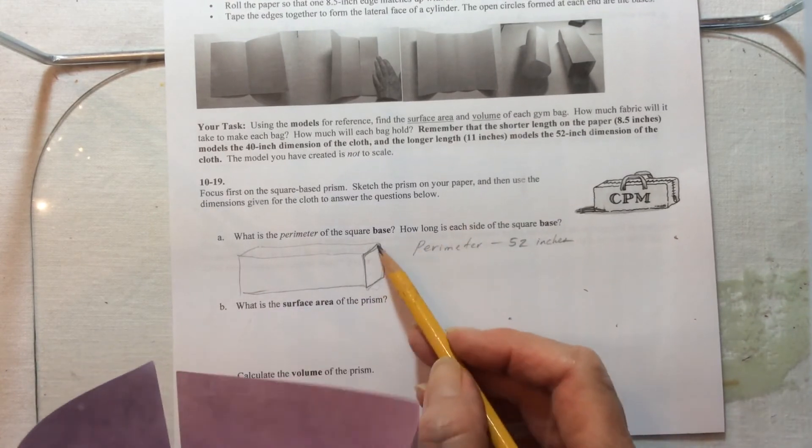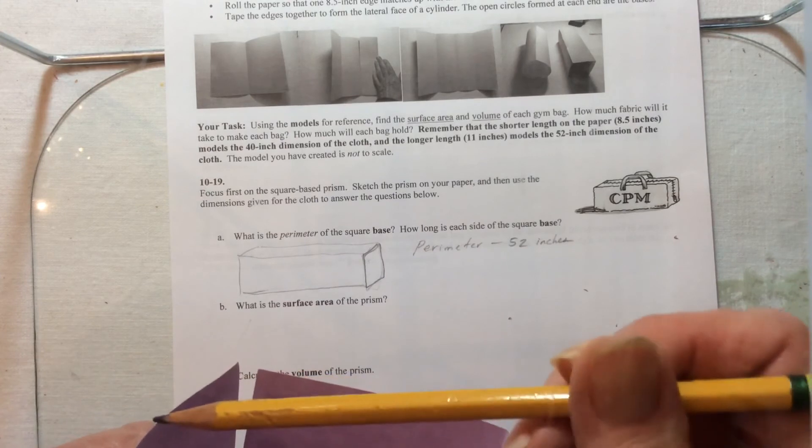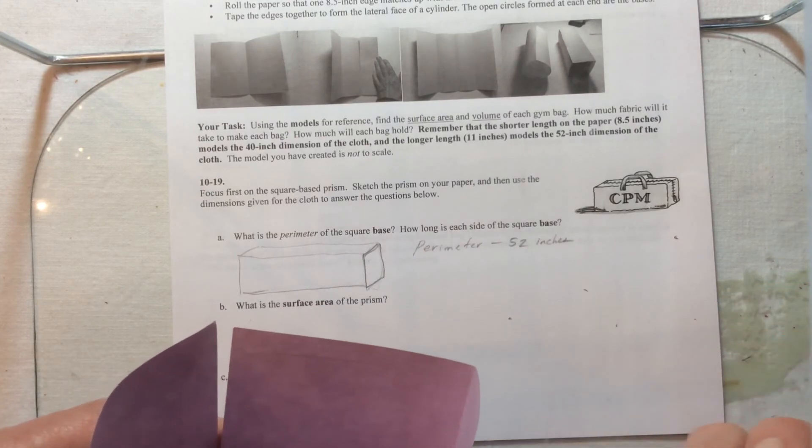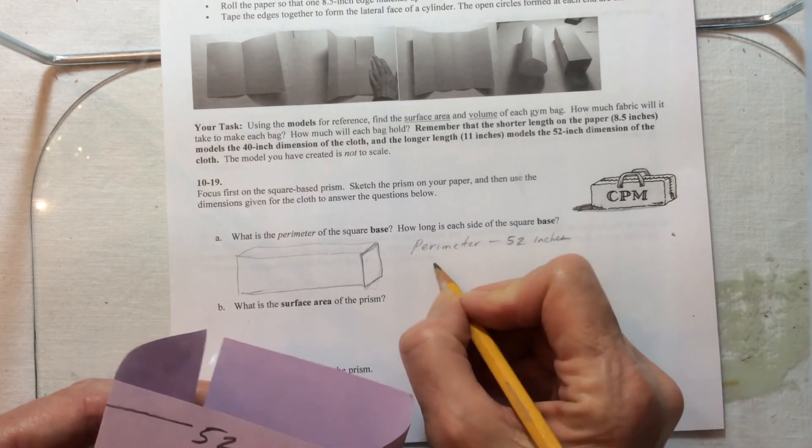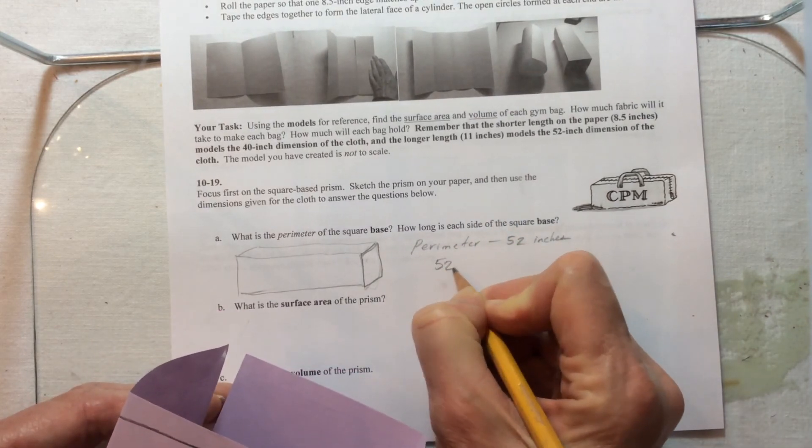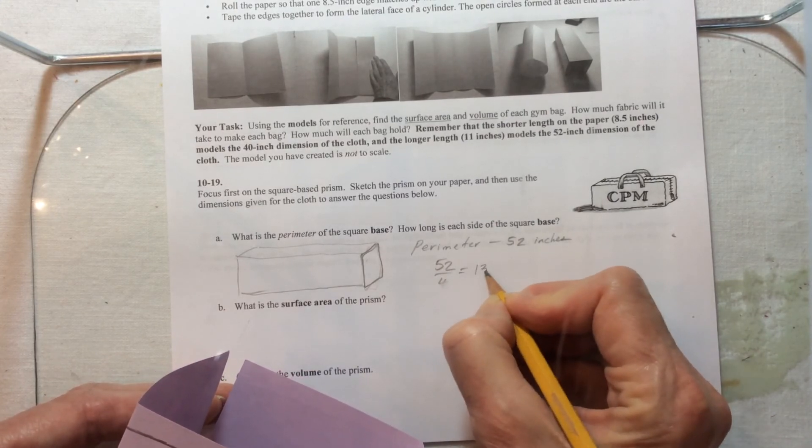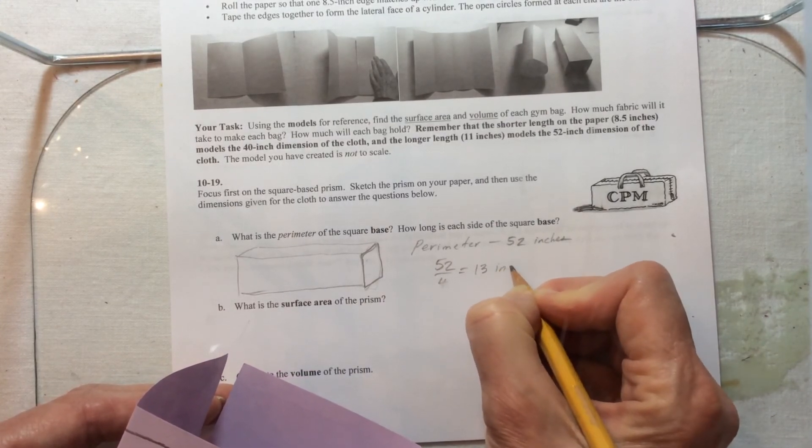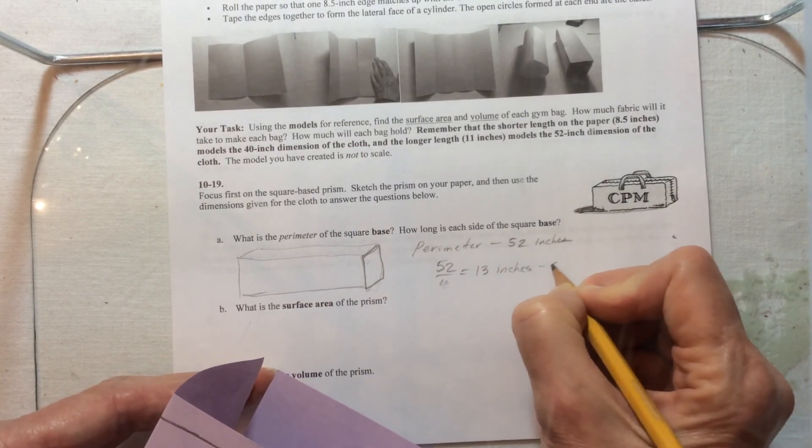Then how long is each one of these sides? Well, we know there are one, two, three, four sides, and they're equal because it's a square. So we can just take 52 and divide that by 4, and we'll get 13 inches for the side.